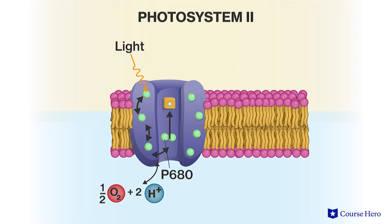The oxygen atom combines with another oxygen atom to make molecular oxygen, and the hydrogen ions are released into the thylakoid lumen, where they create a proton gradient that will be used to form ATP by the process of chemiosmosis.